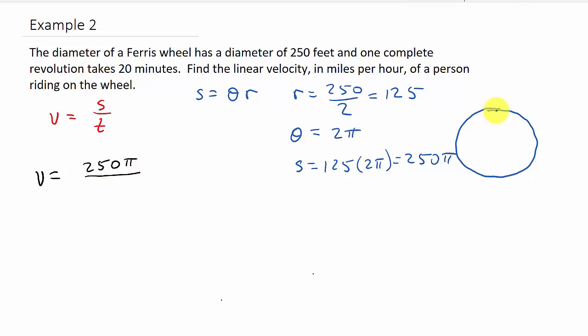Now remember the S, that's arc length, okay. So how long did it take it to go 250 pi? Well, it said for it to make one revolution, it took 20 minutes. So T is 20, alright.